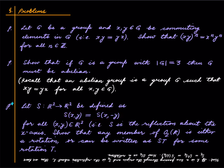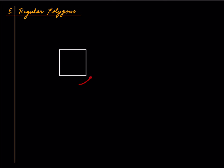Before getting into the definition of the dihedral group, let me make a small comment about regular polygons. A regular polygon is not just a polygon with all sides of equal length. For instance, you can take a square, erect an equilateral triangle on one side, and erase that shared edge to get a pentagon with all sides equal — but that is not a regular pentagon. A regular polygon is a polygon with all sides equal and all angles also equal.